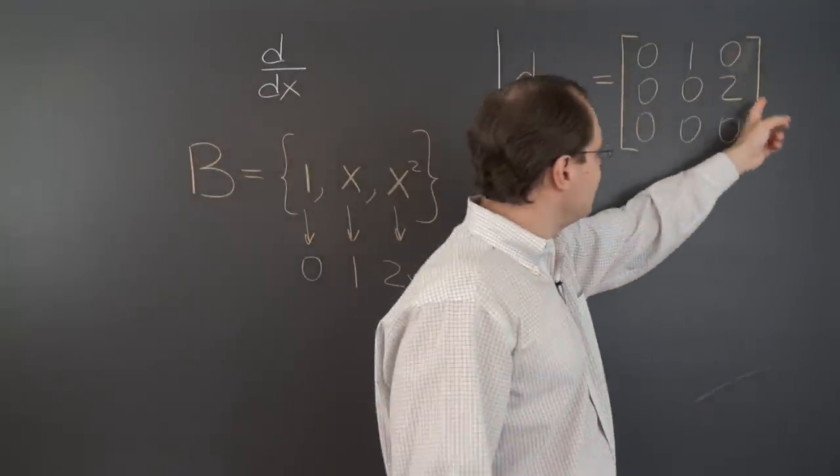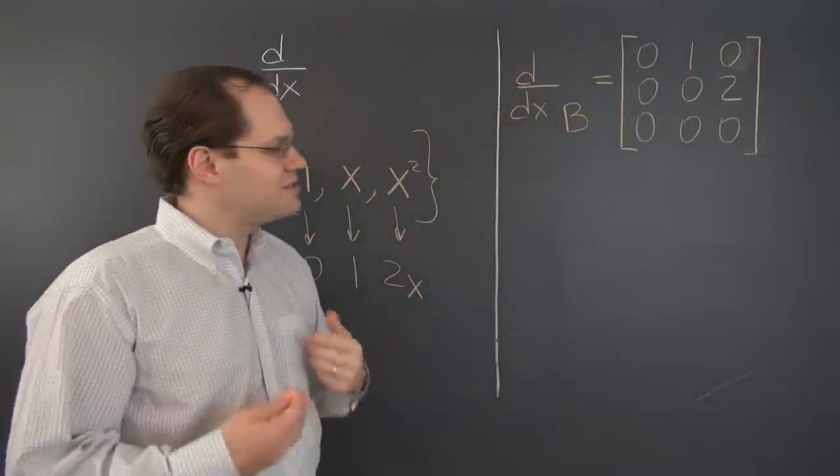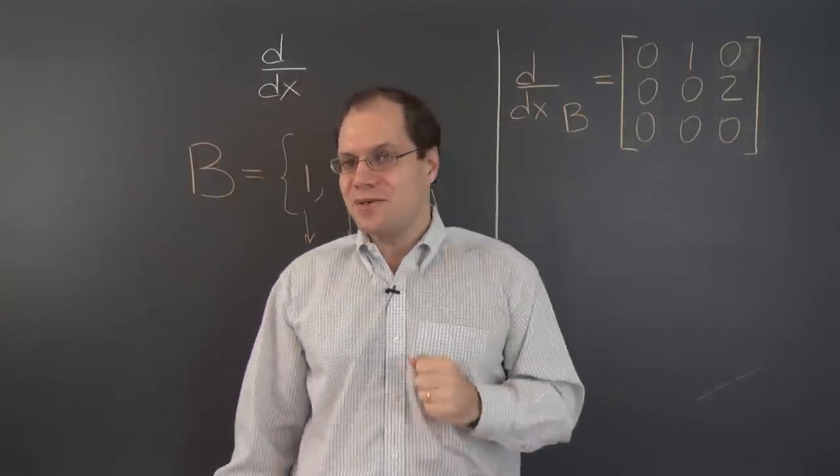So these numbers are not on the diagonal. They're one position off the diagonal, which of course is the reason for everything that we'll see with this linear transformation.